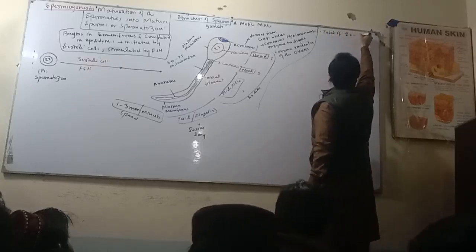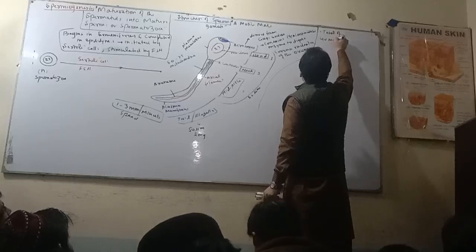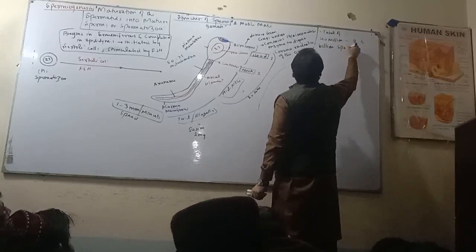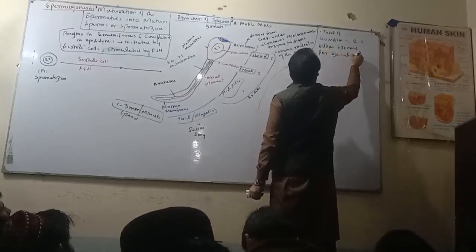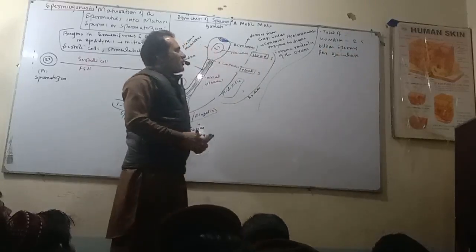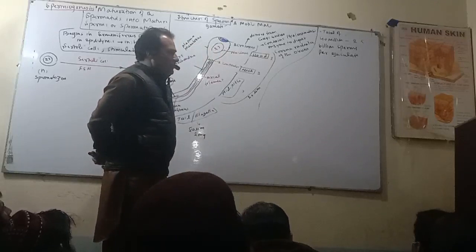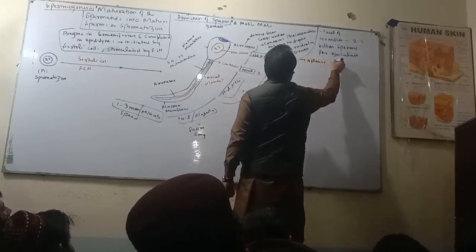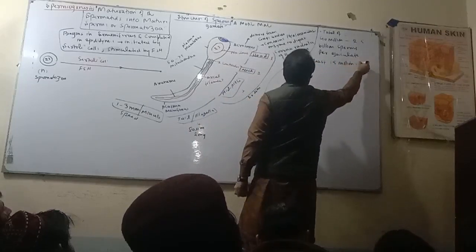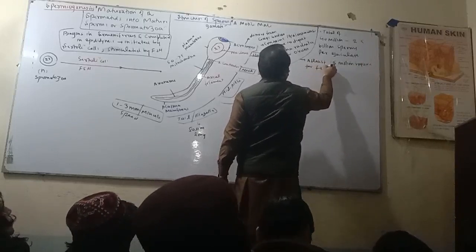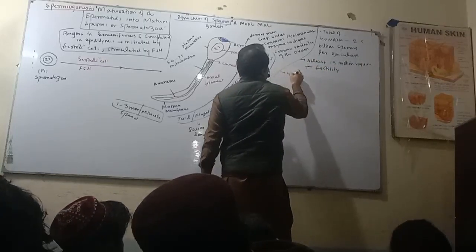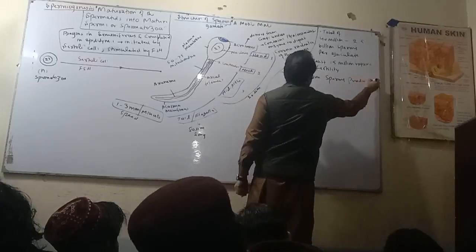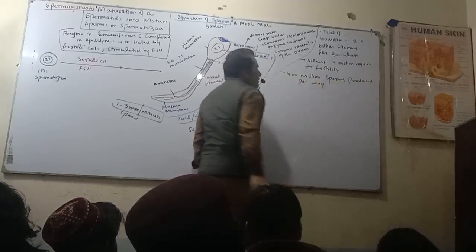In a normal adult human male, there are 200 to 250 million sperm per ejaculation. At least 15 million sperm are required for fertility. Approximately 400 million sperm are produced per day in a normal human being.